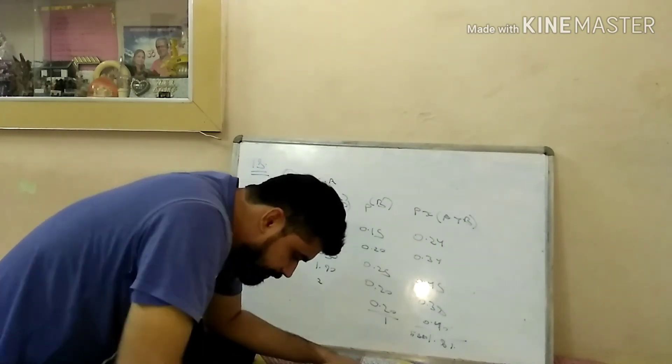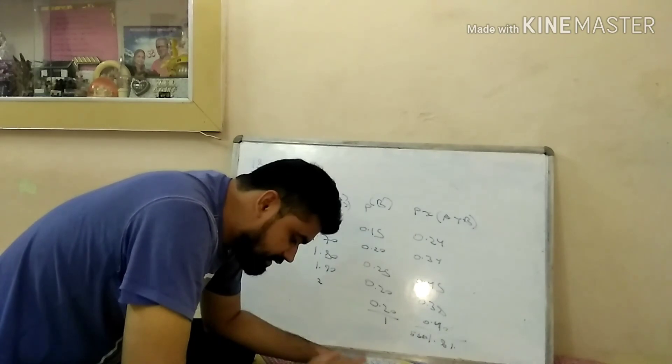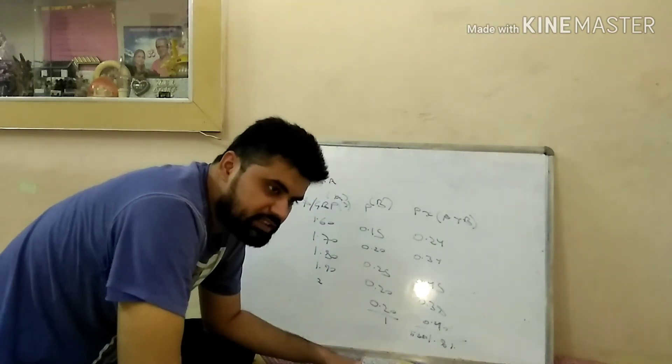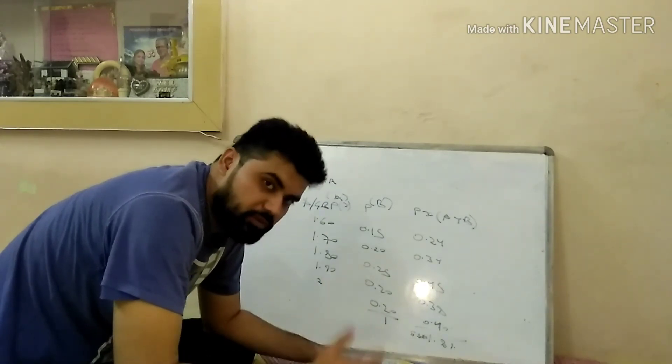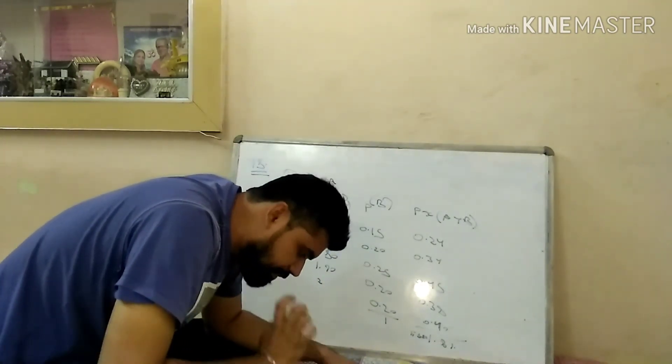Obviously, when we get $1.80 forward but expected spot rate is 1.82, I will assume that I will keep this money so it will be more profit. Simple, this is the second question.